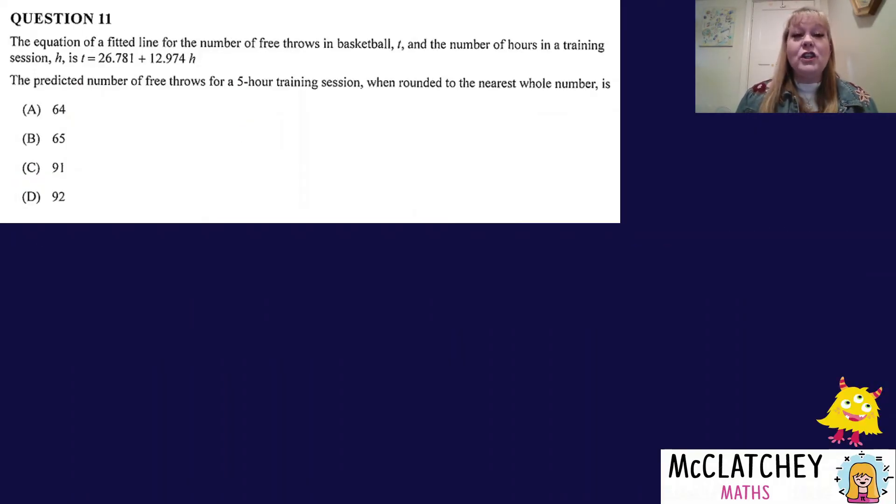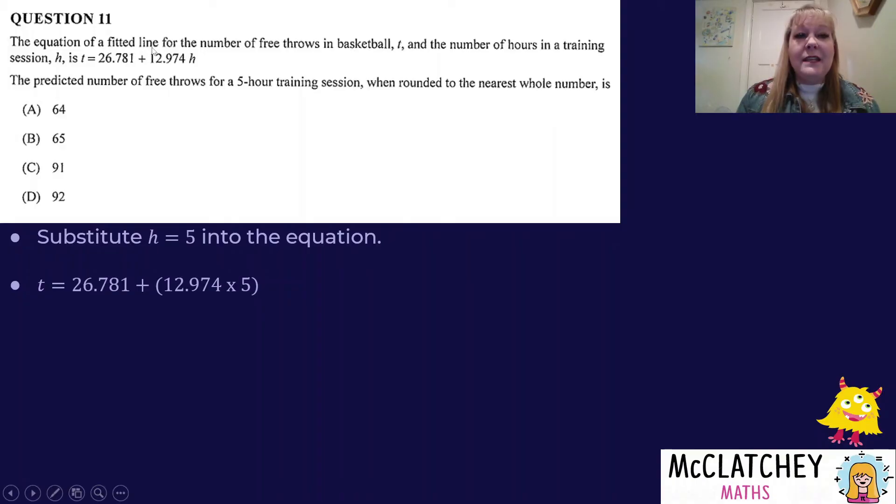Let's look at question 11 now. The equation of a fitted line, also known as a line of best fit or a least squared regression line, for the number of free throws in basketball T and the number of hours in a training session H is T equals 26.781 plus 12.974H. T is the number of free throws, and H is the number of hours we've trained. So if I've done a five-hour training session, I'm going to be substituting H equals 5 into the equation. I'm going to put that in brackets because it's very tempting to add these two numbers first, but only this number is multiplied by 5.